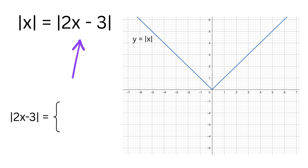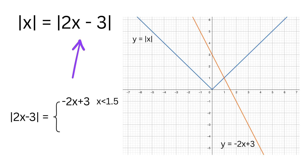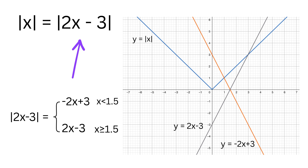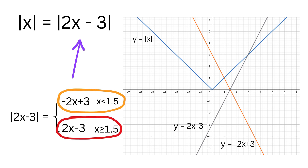Now do the same for the right-hand side, which is the absolute value of 2x minus 3. For x less than 3/2, the inside 2x minus 3 is negative, so the absolute value becomes minus 2x plus 3 — a straight line with slope minus 2 and y-intercept 3. For x greater than or equal to 3/2, the inside is non-negative, so the absolute value is simply 2x minus 3 — a straight line with slope 2 and y-intercept minus 3.